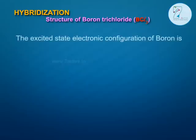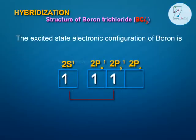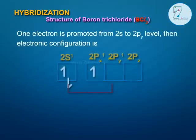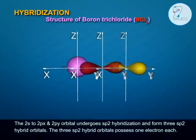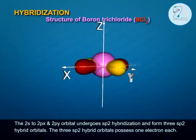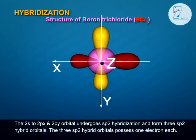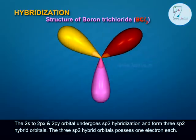The excited state electronic configuration of Boron is 2s1, 2p2. One electron is promoted from 2s to the 2py level, giving the electronic configuration 1s2, 2s1, 2px1, 2py1. The 2s, 2px, and 2py orbitals undergo SP2 hybridization and form three SP2 hybrid orbitals.